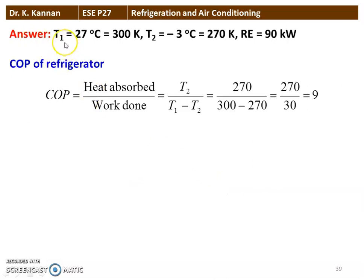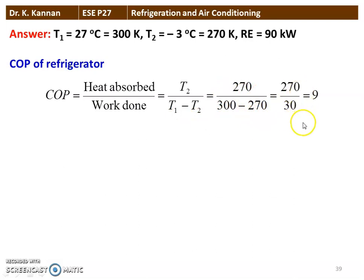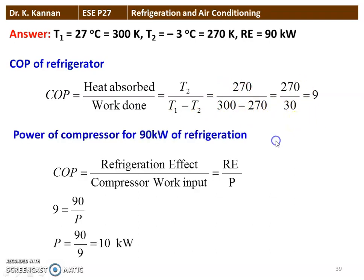The temperature limits are given: higher temperature T1 is 27 degree Celsius, which is 300 Kelvin; lower temperature minus 3 degree Celsius, which is 270 Kelvin. The refrigeration effect equals 90 kilowatts. The COP of the refrigerator equals heat absorbed divided by work done, which is also equal to T2 divided by T1 minus T2. So, 270 divided by 300 minus 270, which is 270 by 30, equal to 9. Power of the compressor: COP equals refrigeration effect divided by compressor work input, so 9 equals 90 divided by power. Power equals 90 by 9, equal to 10 kilowatts. This is the answer to the question.